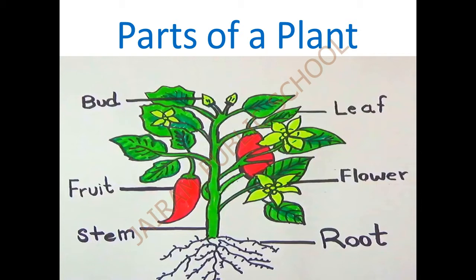First one - what is this? Bud. See the spelling B-U-D, bud. It is the small flower, it is the initial stage of a flower. It is called as bud. Keep your finger and say B-U-D, bud.